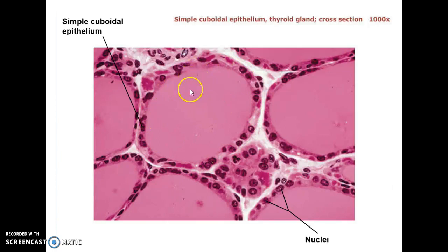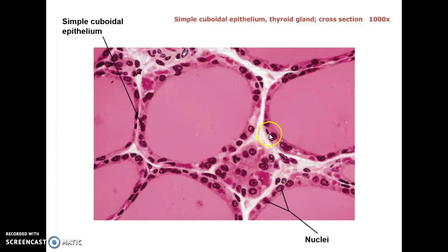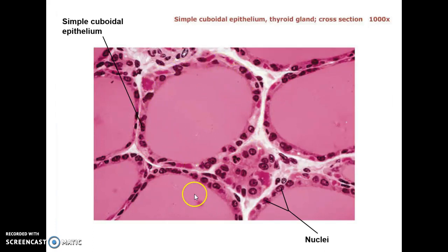Those products then get taken up into the blood as an endocrine hormone. You can actually see here probably a blood vessel in that region. Those nice cuboidal cells surround the tubules in the thyroid gland. This is another tubule here, and another tubule here, with their simple cuboidal cells around them.